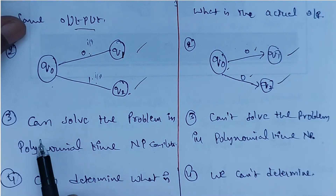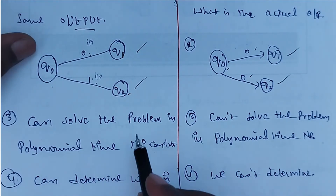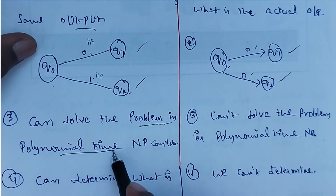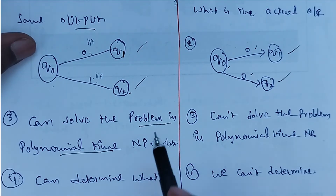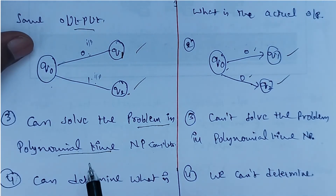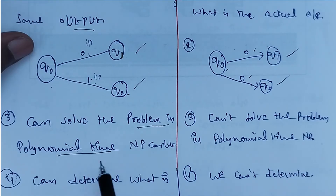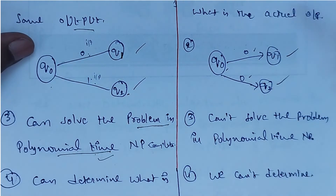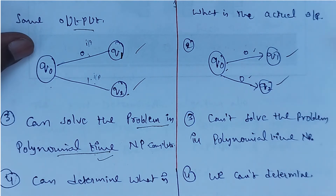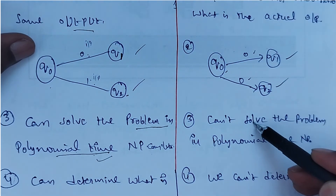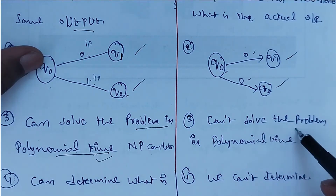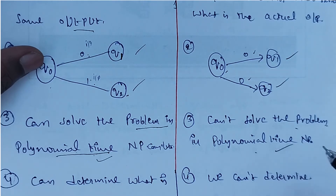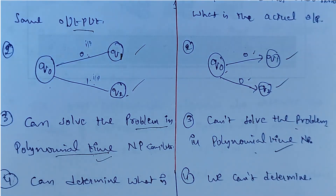The third point is: a deterministic algorithm can solve the problem in polynomial time. A deterministic algorithm is one where the problem is solved in a given polynomial time. A non-deterministic algorithm cannot solve problems in a given polynomial time.